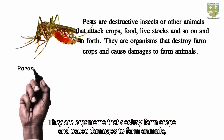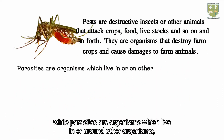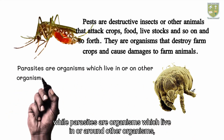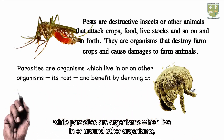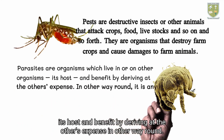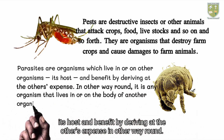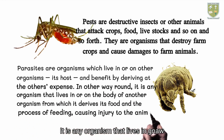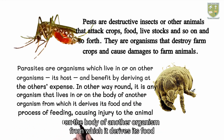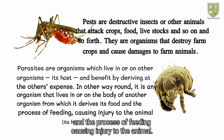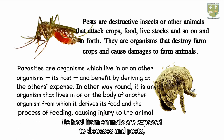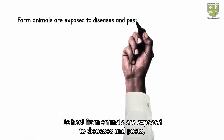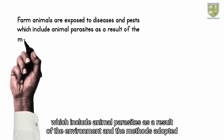Parasites are organisms which live in or on other organisms — their host — and benefit at the host's expense. In other words, a parasite is any organism that lives in or on the body of another organism from which it derives its food, and in the process of feeding causes injury to the host animal. Farm animals are exposed to diseases and pests, which include animal parasites, as a result of the environment and the methods adopted by the owner of the farm.